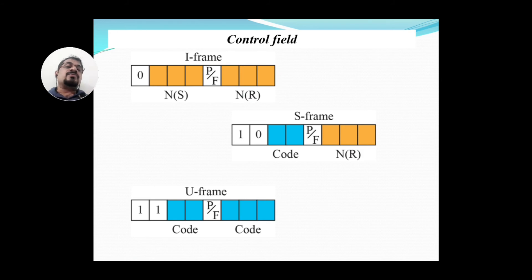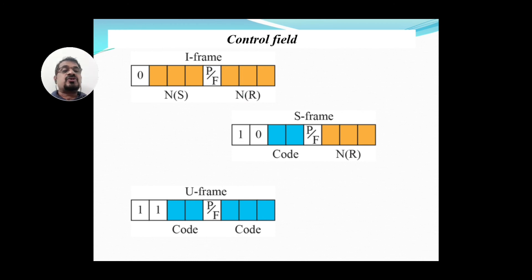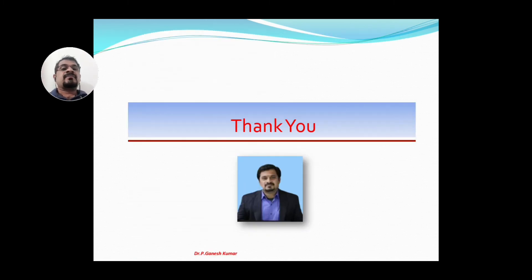In the Supervisory frame control field, the next two bits are a code, and the last three bits mention the sequence number of frames already received. Before those, one bit is the Poll/Final bit, common to all three frame types. For Unnumbered frames, which carry management information, the first two bits are both one, and the next two bits plus last three bits specify management information related codes.